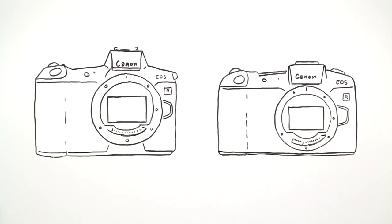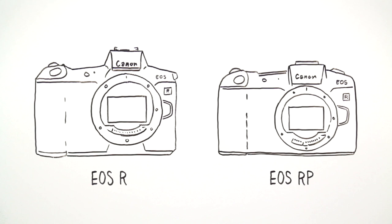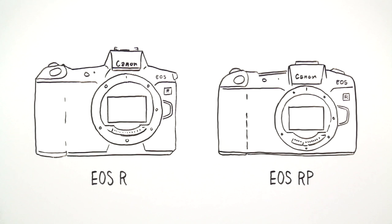Mirrorless full-frame cameras such as the Canon EOS R and EOS RP allow for more compact, lightweight designs.